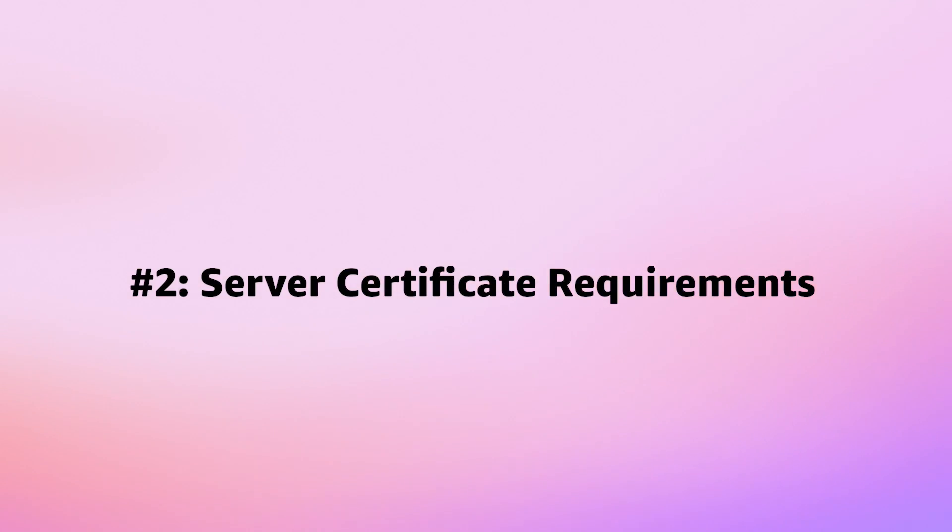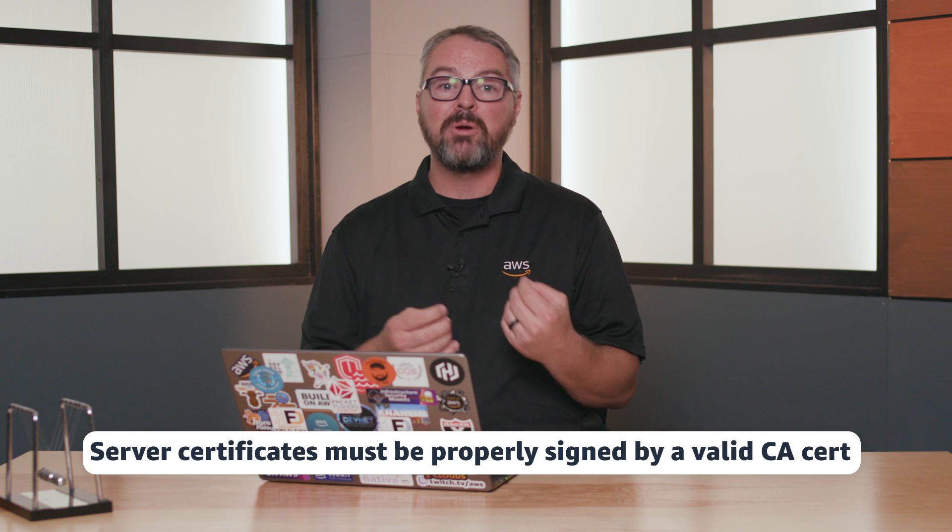Number two: server certificate requirements. In addition to the CA certificate, you'll also need to provision server certificates for the domains that you want the firewall to inspect. The server certs should be signed by the CA certificate you imported into ACM. When you configure the TLS inspection settings in the firewall, you'll associate these server certificates with the appropriate domains. The firewall will then use these certificates to decrypt and re-encrypt the TLS traffic flowing through the firewall. It's super important that the server certificates are properly signed by a valid CA cert. If the server cert isn't signed by the CA you've configured, the TLS handshake is going to fail and the traffic won't be inspected.